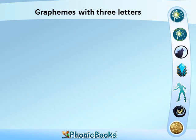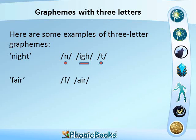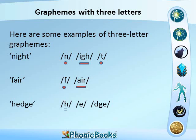Graphemes with three letters. Here are some examples of three-letter graphemes. Take the word 'night' and segment it and you get N, I, T. The word 'fair' and segment it: F, air. The word 'hedge' and segment it: H, E, J.